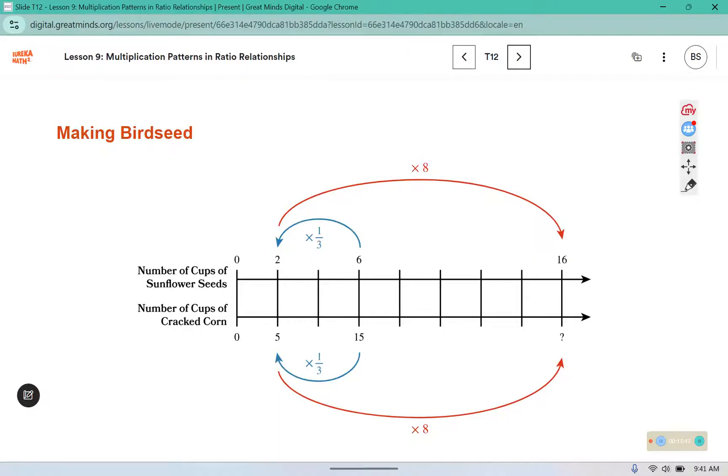You can see that they split 6 into 3 parts and 15 into 3 parts, and that gave them 2 and 5. Then they noticed that there was a relationship between 2 and 16 where they can multiply by 8. And 5 times 8 is 40. So they don't even need to fill in the whole double number line to figure out what the answer is.